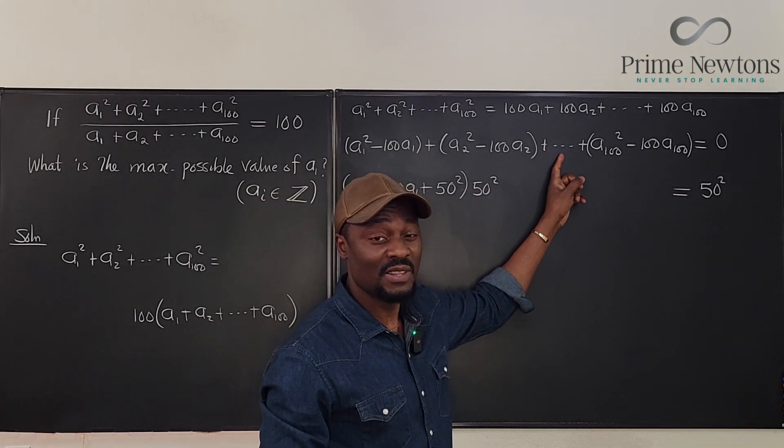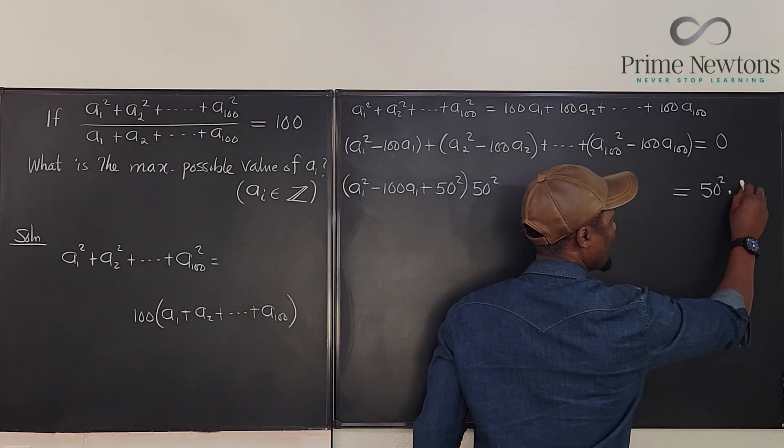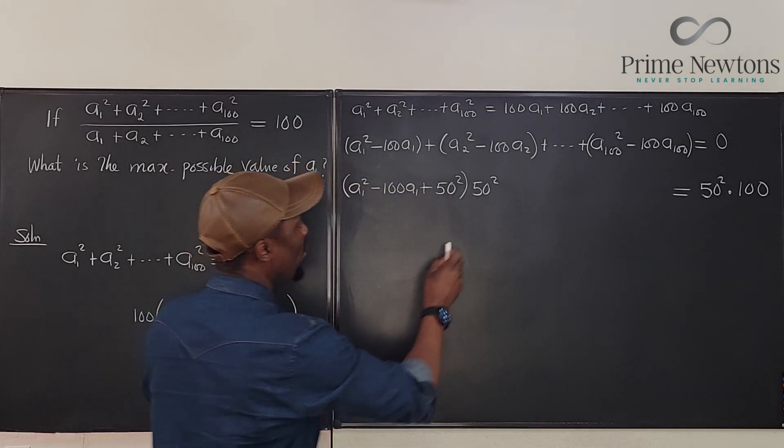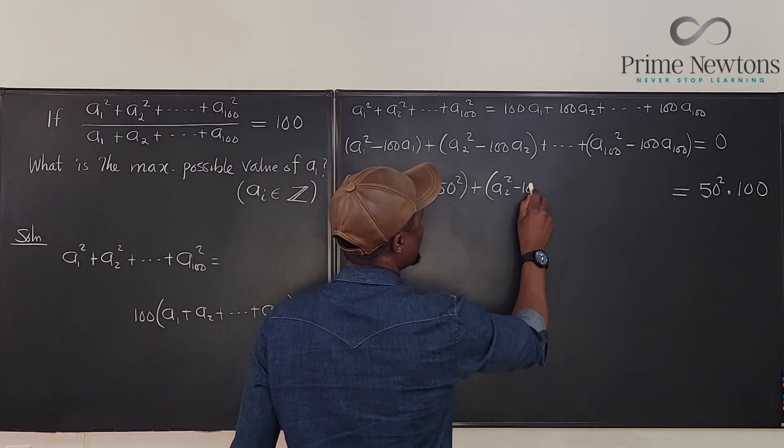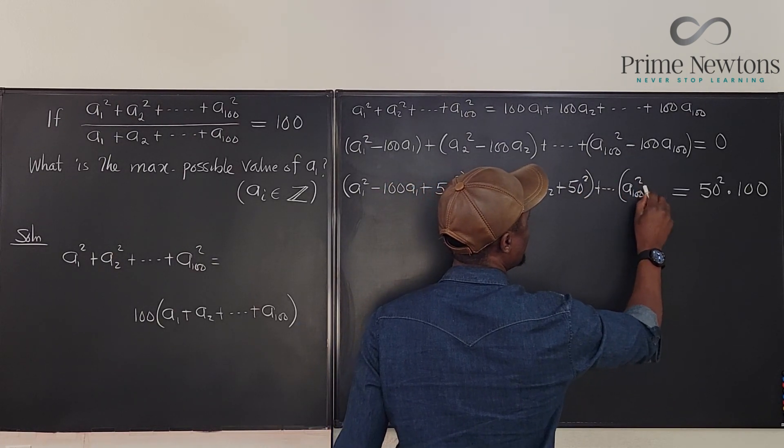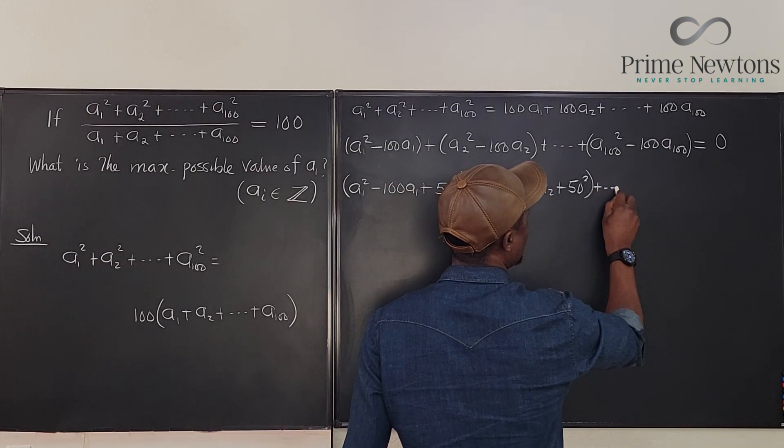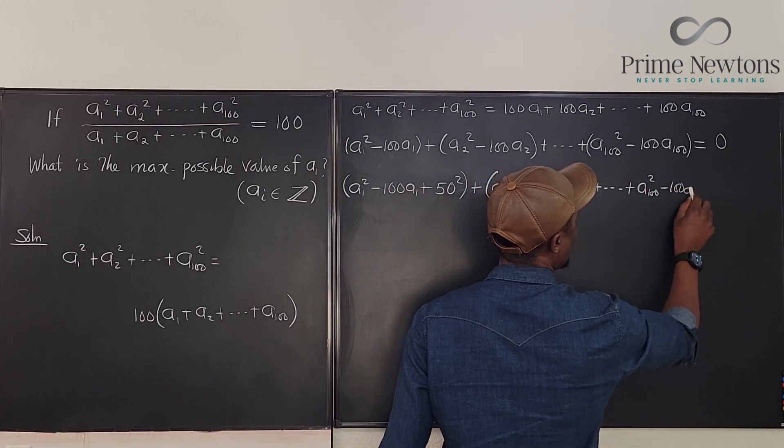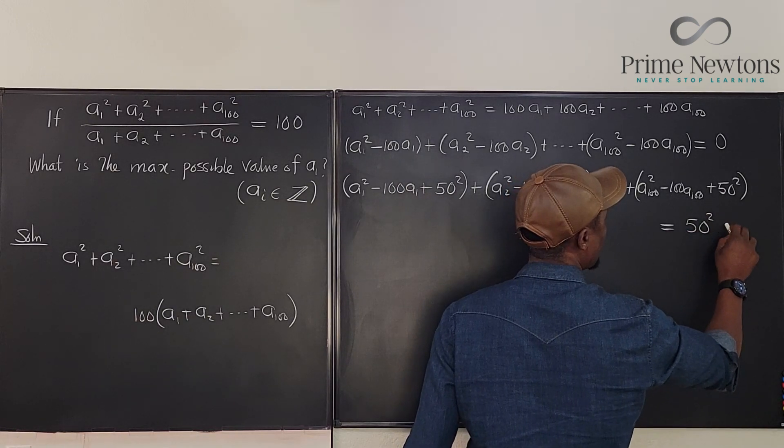Remember, this gap contains 97 that we didn't talk about, right? 1, 2, you have 97 added to this, and then the 100th one. So there's going to be 100 times 50 squared because all of these will be perfect squares. So let me rewrite this nicely as a perfect square. So this becomes plus A2 squared minus 100 A2 plus 50 squared plus goes all the way to A100 squared minus 100 A100 plus 50 squared equals 50 squared times 100.